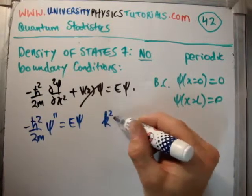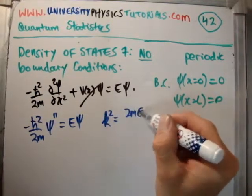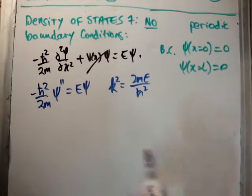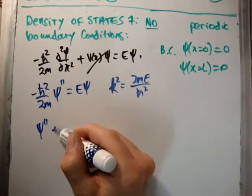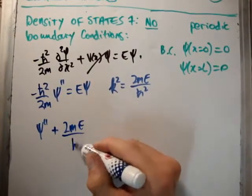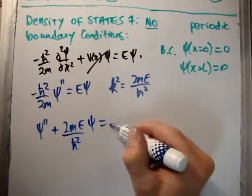Let's k squared is equal to 2mE over h bar squared. And if we do that we get that psi double prime plus 2mE over h bar squared psi is equal to 0.